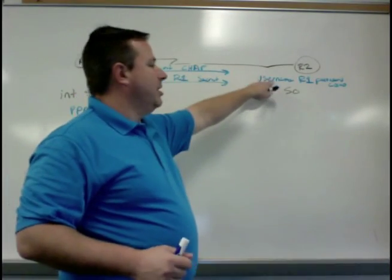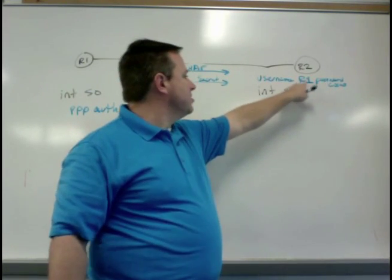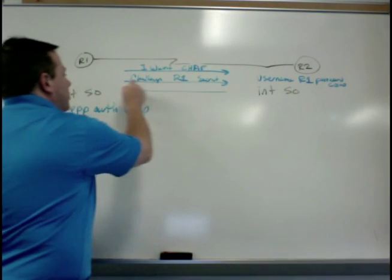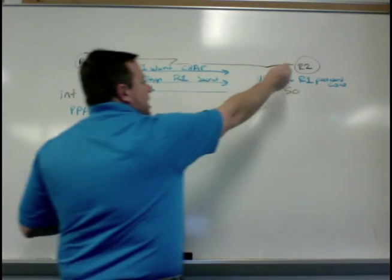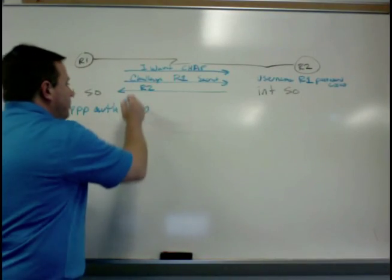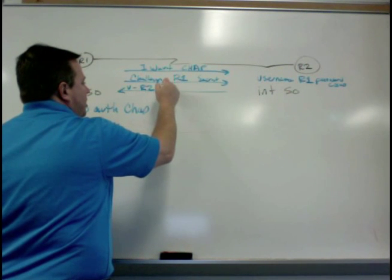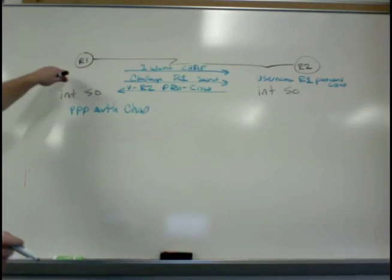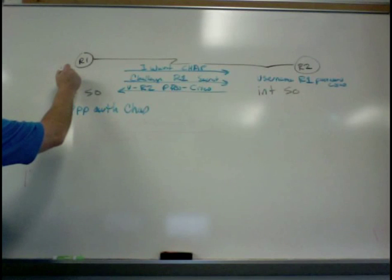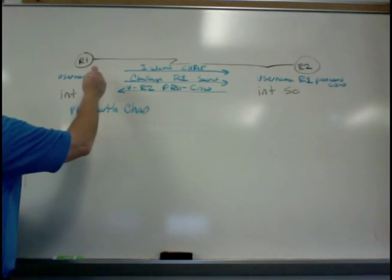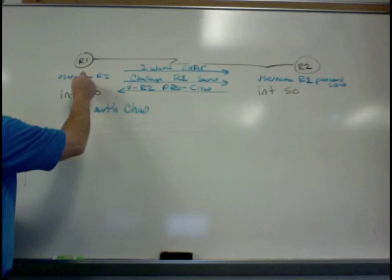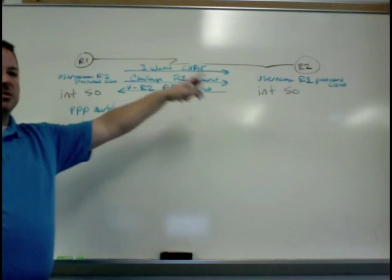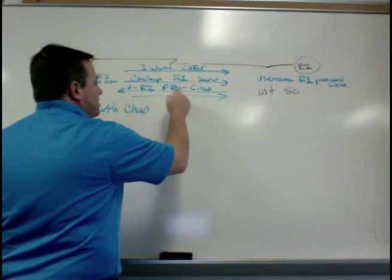If it finds one, it grabs the password that's associated with a name that was provided in the challenge. It sends back the other way its own router name as the username. But the password is Cisco, the one that I picked up there. So that means on this side, what I need is username R2 password Cisco. So that I can match what gets sent back to me, and then I will send back and accept.